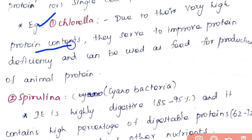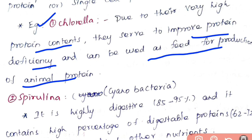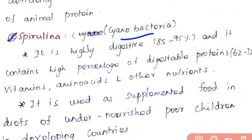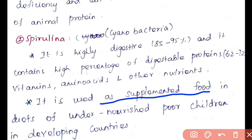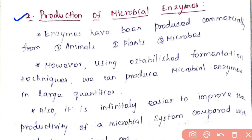Chlorella is a fungi with very high protein content, used to improve protein deficiency in animals and as a feed for production of animal protein. Spirulina is a cyanobacteria with highly digestible protein content of 62 to 72 percent, and contains vitamins, amino acids, and other nutrients. It is used as a supplemental food in diets of undernourished children in developing countries.